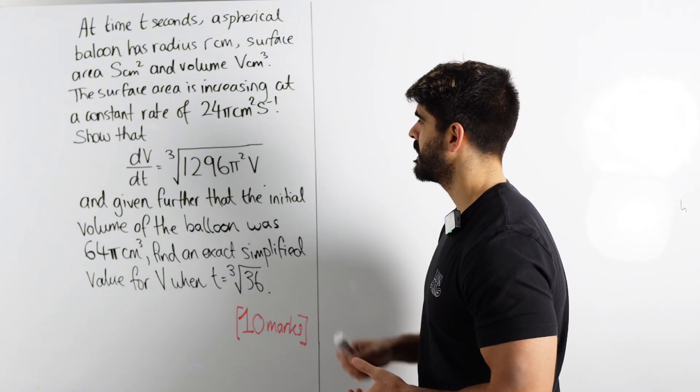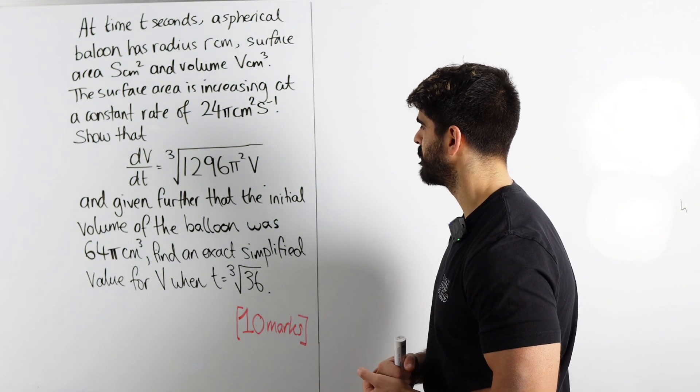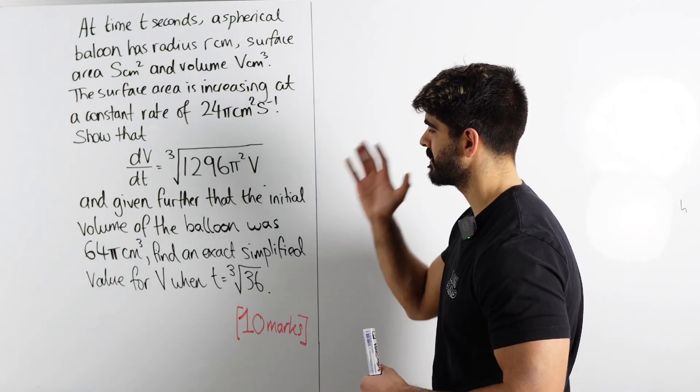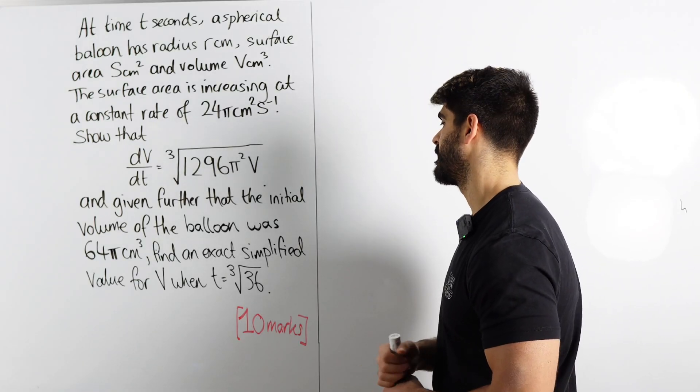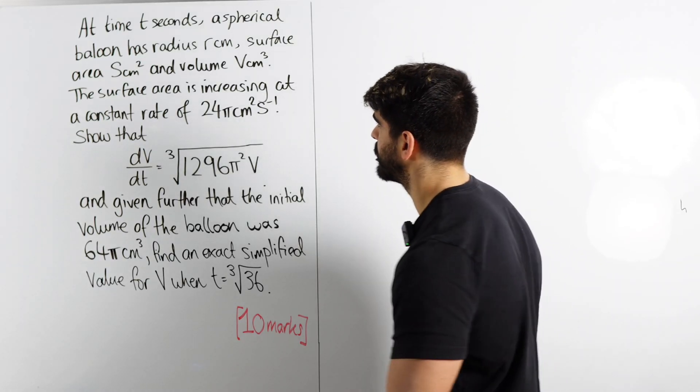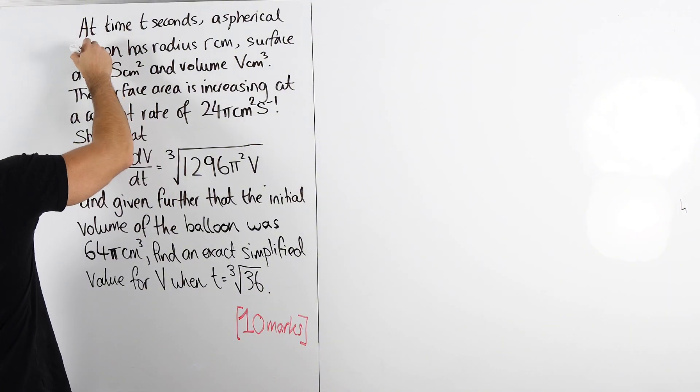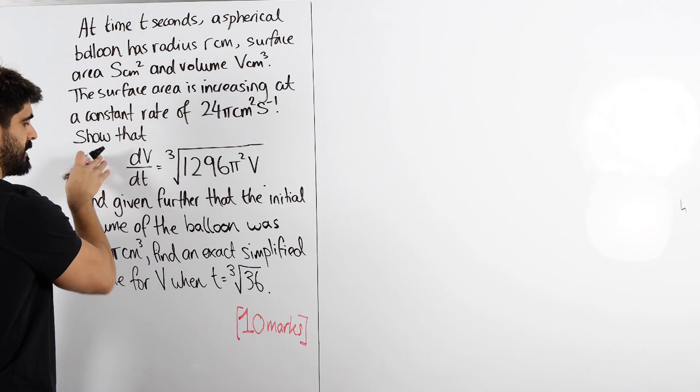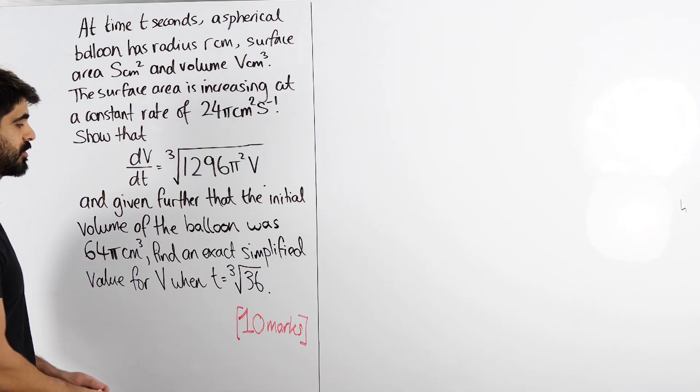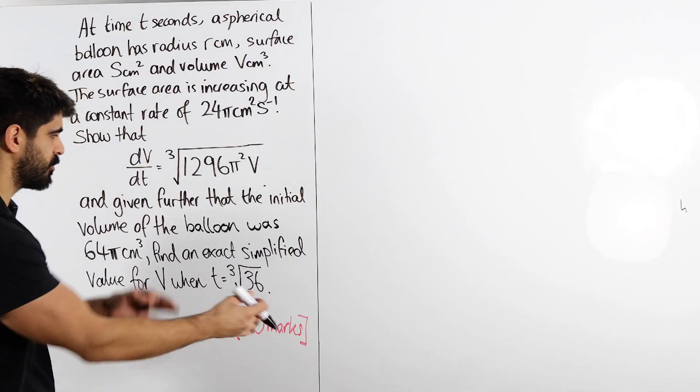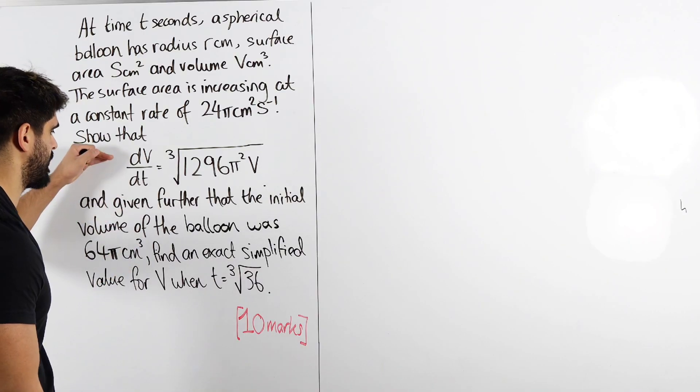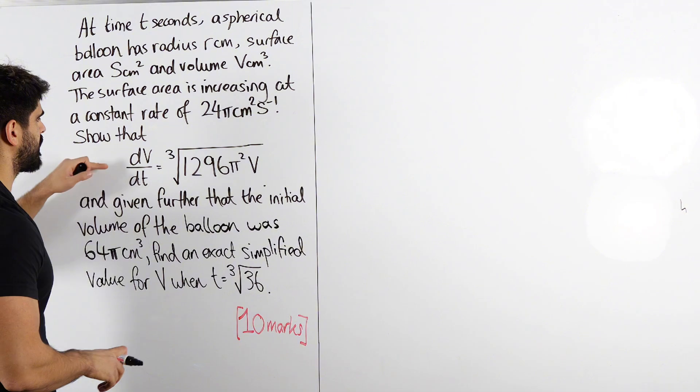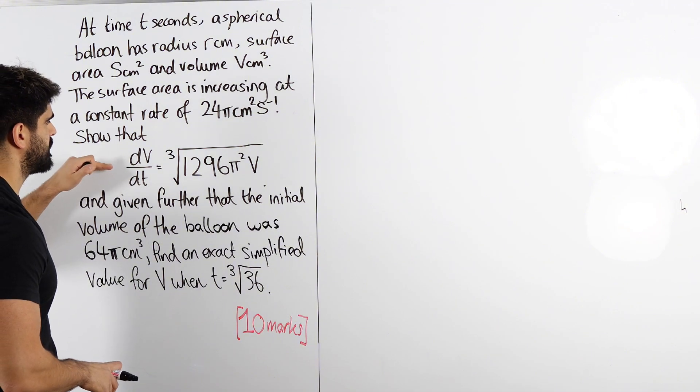Show that this is true. And then given further that the initial volume of the balloon was 64π centimeters cubed, find an exact simplified value for v when t is the cube root of 36. Alright. There's no part a or b here, most likely in your exam they will have part a and b.